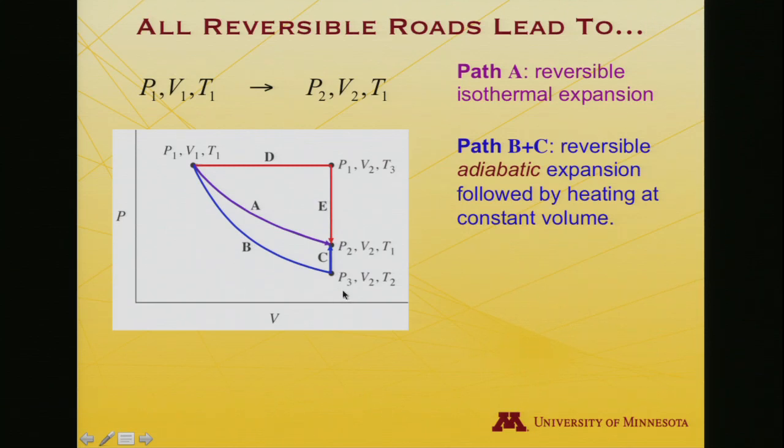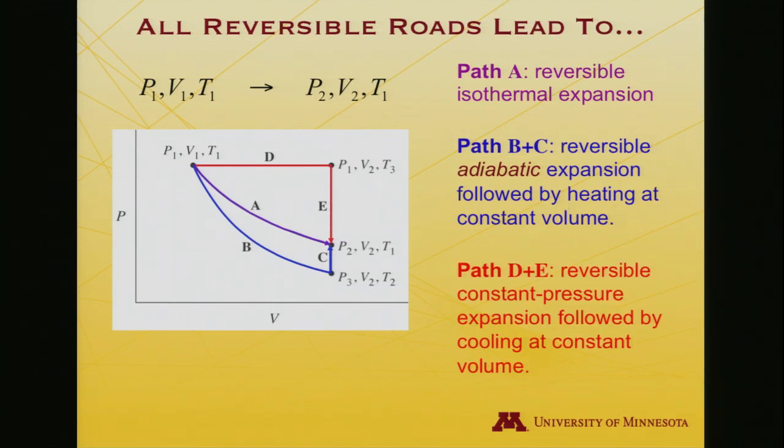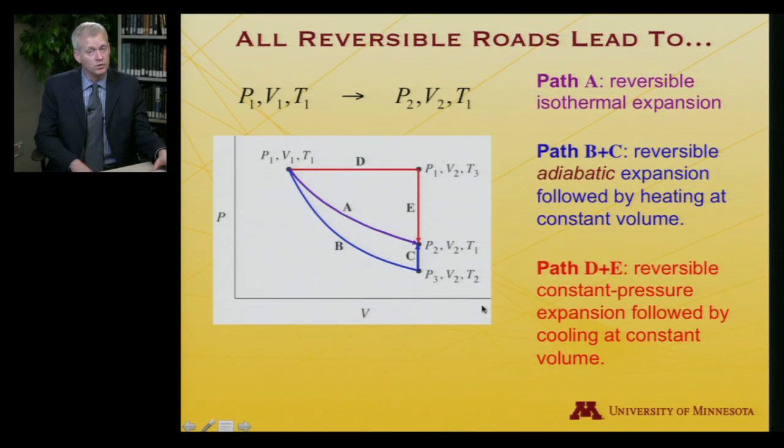I'll also consider a different path, shown here in blue. Path B will be a reversible adiabatic expansion. I'll define what adiabatic means momentarily. And then, once I get to my final volume, V2, I'll be at a lower pressure, I'm going to heat it until it gets to the desired higher pressure, a heating at constant volume. And the third path I want to consider is the path DE, the red path. So that is a constant pressure expansion from the initial volume to the final volume, followed by cooling to get down to the original temperature. So that's a cooling at constant volume.